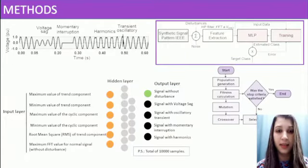We obtained 10,000 samples equally divided into five classes. Each electrical disturbance is analyzed: voltage sag, transient oscillatory, momentary interruption, and harmonics, and no disturbing signals.